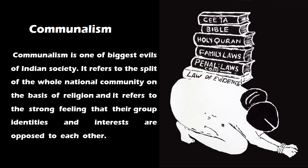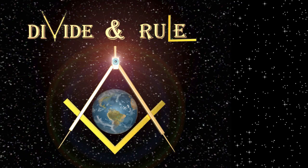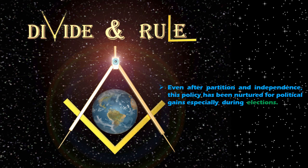Do you know what communalism is? Communalism is one of the biggest evils of Indian society. It refers to the split of the whole national community on the basis of religion, and it refers to the strong feeling that their group identities and interests are opposed to each other. The divide and rule policy of the British government has sown the seeds of modern communalism in India. Even after partition and independence, this policy has been nurtured for political gains, especially during elections.